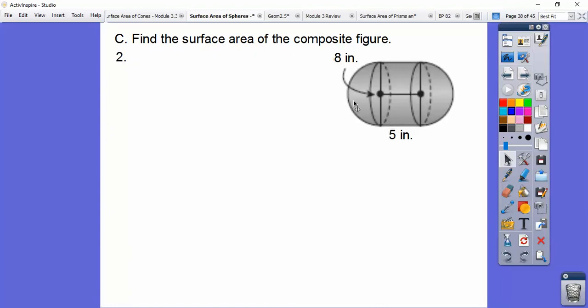So here I see a hemisphere on this side, another hemisphere on this side. So when we put them together, it's a whole sphere, so 4πr², and then we'll add the lateral area of the cylinder.